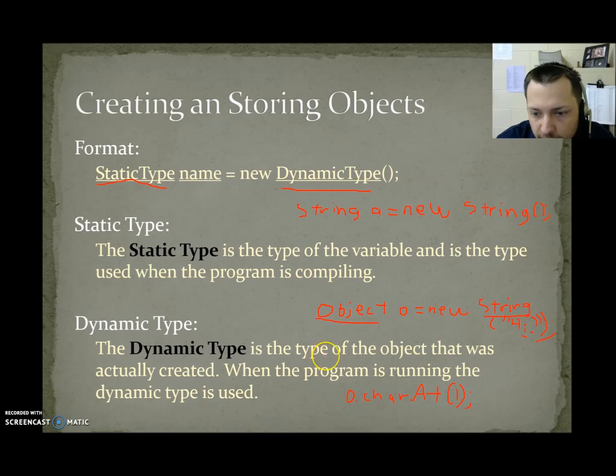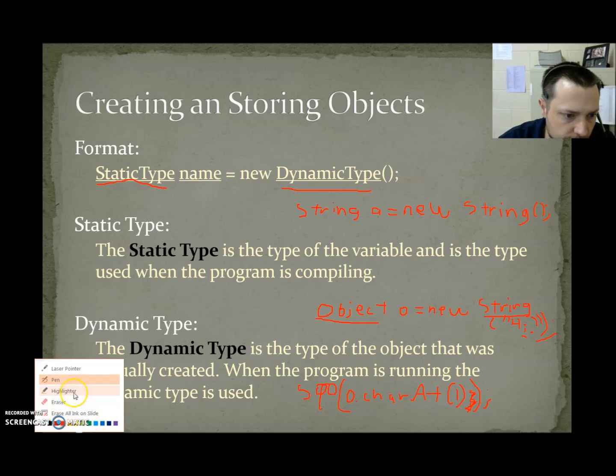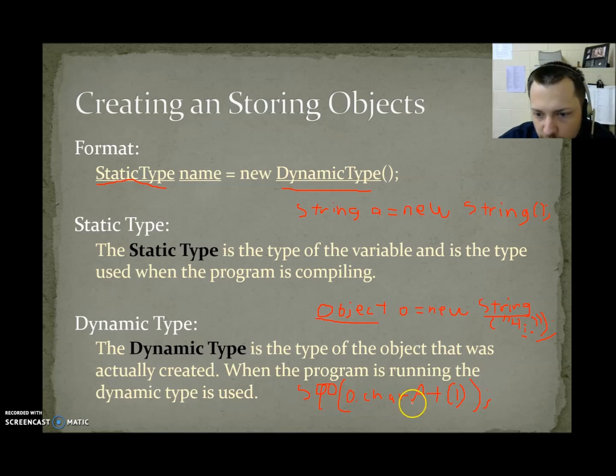If I said O dot charAt one, the code actually wouldn't compile. Even though we really created a string, at compile time, when we're trying to compile, it's using the static type. It thinks O's an object. We really know it's a string, but it thinks it's an object, and it's like, there's no charAt method. That's silly. So, it wouldn't actually compile this code.